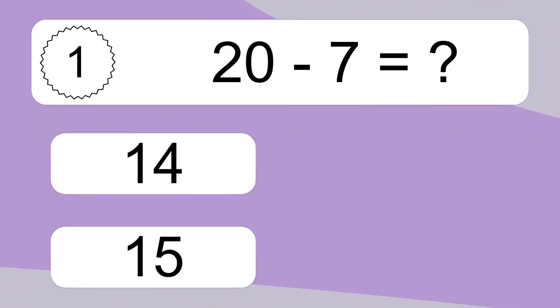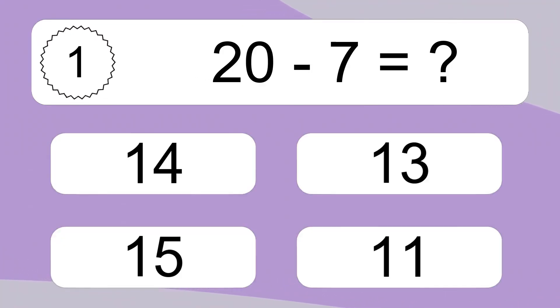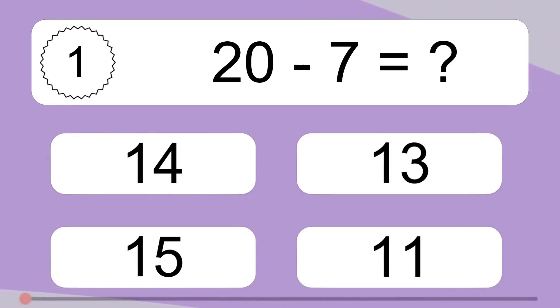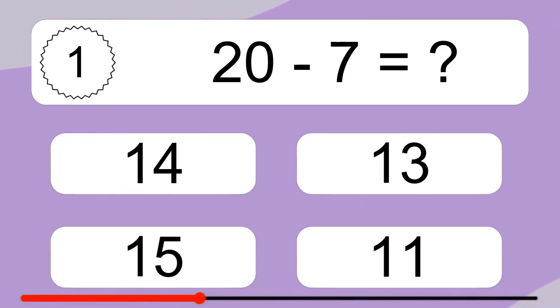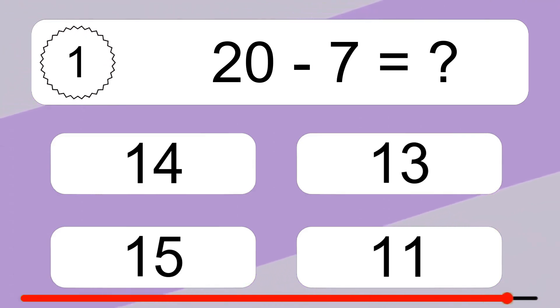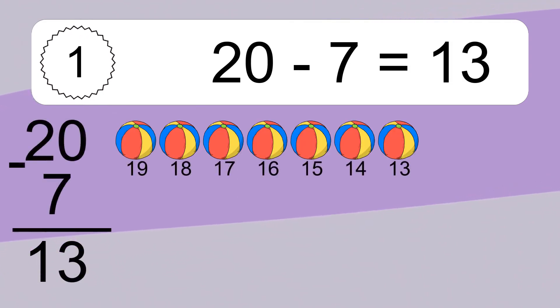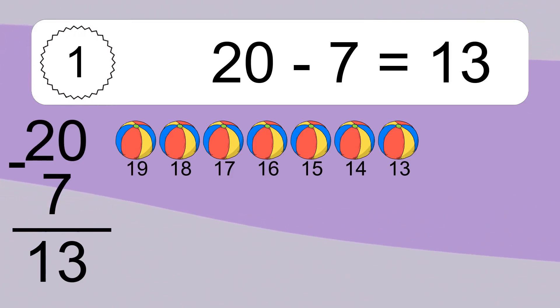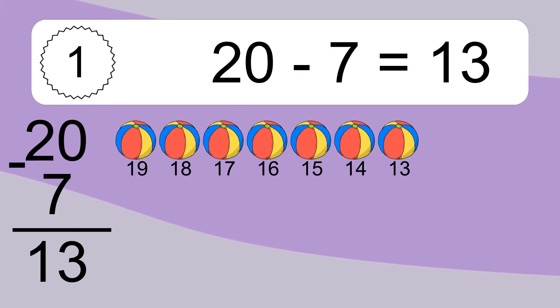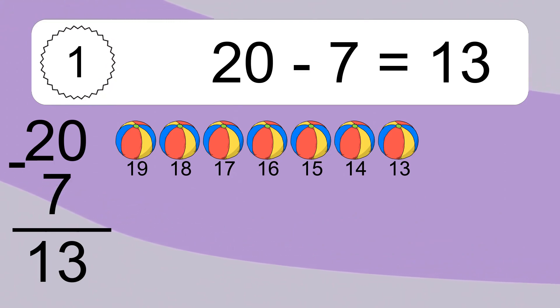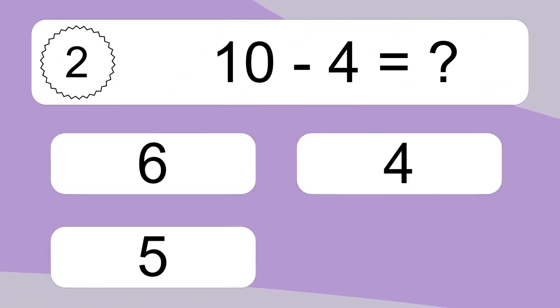20 minus 7 equals what? 20 minus 7 equals 13. Let's count it: 19, 18, 17, 16, 15, 14, 13.